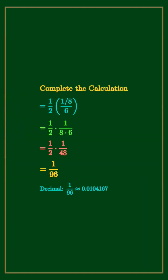Substitute: 1 half times 1 eighth over 6 equals 1 half times 1 over 48 equals 1 over 96.